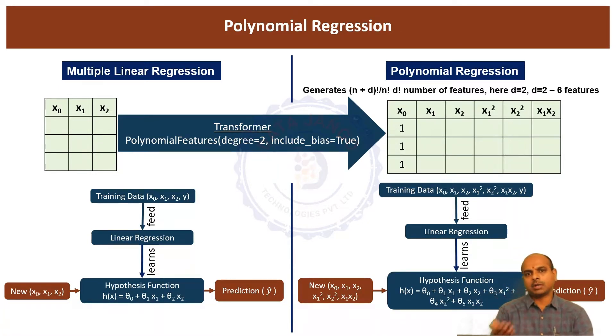I said we need to make the model complex. One way to make the linear model complex is by doing a polynomial regression. Before we do a code example on polynomial regression, let us try to understand the intuition behind how exactly the polynomial regression works.